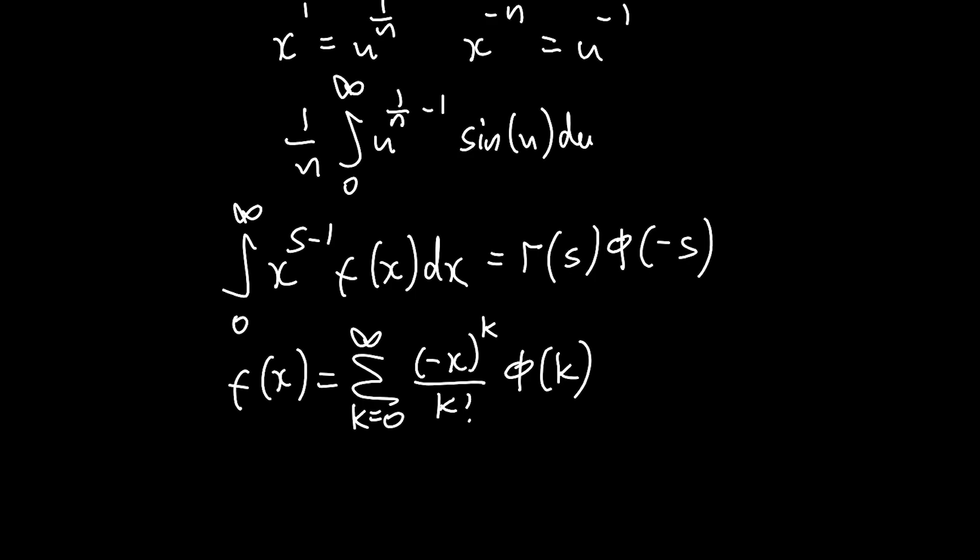So how are we going to use this with our integral above? Well, firstly, you could spot that if we have s as 1 over n, then we can plug that in. And if we have f of x as sine x, then we can plug that in as well. So really what we want to find is this function phi of k such that we can get our answer phi of minus s or phi of minus 1 over n.